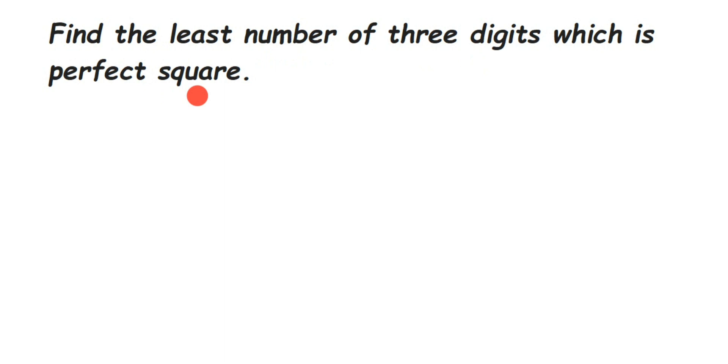So the least number, the least three-digit number, the smallest three-digit number is 100. And if you know, 100 is already a perfect square. We can able to find out square root, so square root of 100 is equal to 10. So smallest three-digit number which is supposed to be perfect square will be 100.